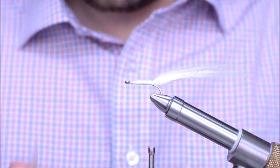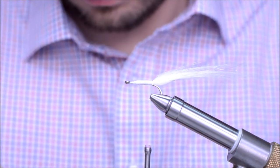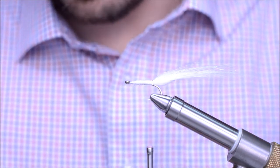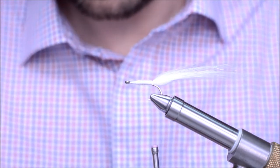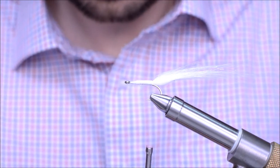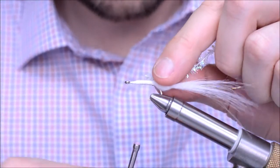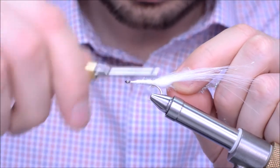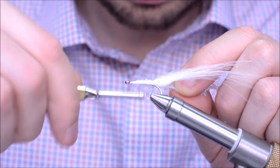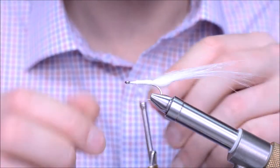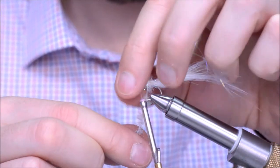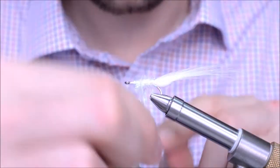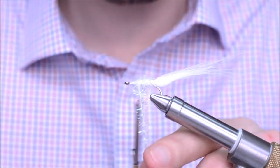For the body of the fly, I'm going to use cactus chenille. The original is using mohair yarn, but I like the flash that I get from using the ice chenille, or polar chenille, or whatever chenille, as long as it's flashy. You can use dubbing. I just think that chenille is much easier to use.